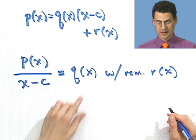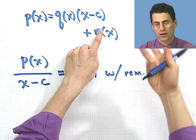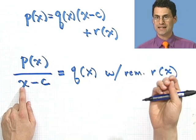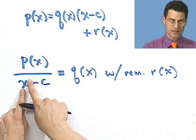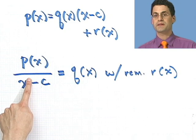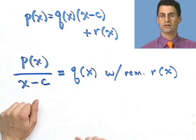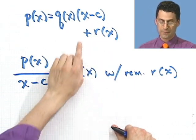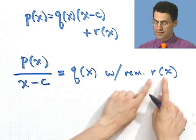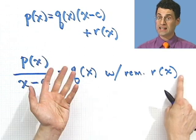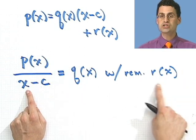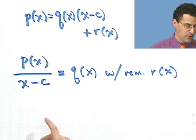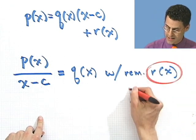Let's think about this for a second. The remainder, in some sense, has to be smaller than the thing I'm dividing by. What does smaller mean here? We're talking about the degree. So x minus c has degree 1, because the highest degree of the x's is 1. So something smaller than that would be degree 0, which means there'd be no x's at all. So in fact, this remainder, which looks like a little function, is really just a constant number.